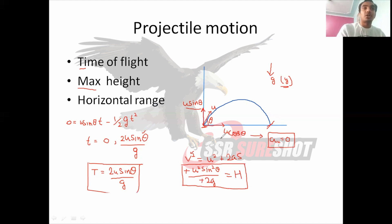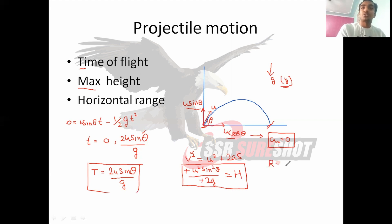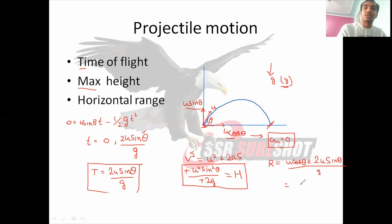For horizontal range, since there is no acceleration in the x-direction, range R is simply the horizontal velocity multiplied by the total time. So R = u cosθ × 2u sinθ/g, which simplifies to R = u² sin2θ / g. This is the formula for horizontal range.